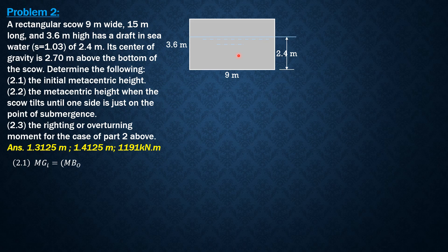1.2 meters, or half of 2.4 from the bottom. The initial metacentric height is MG₀ = MB₀ - GB₀. This is the center of buoyancy, 1.2 meters from the bottom. The center of gravity is 2.7 from the bottom.